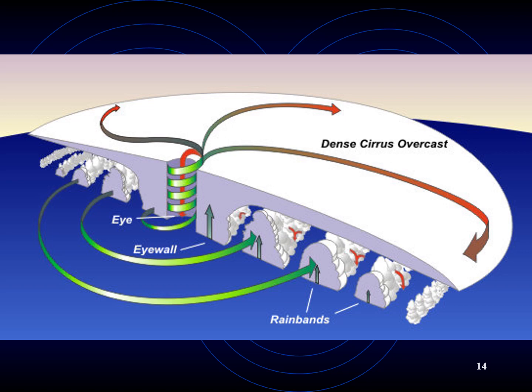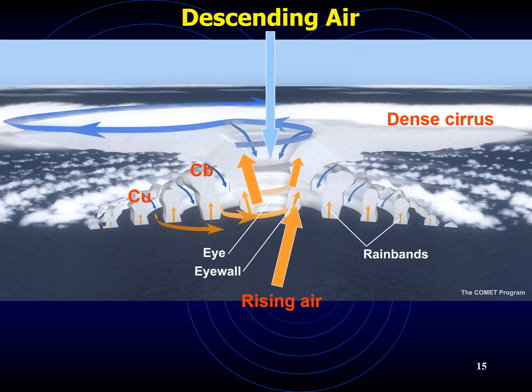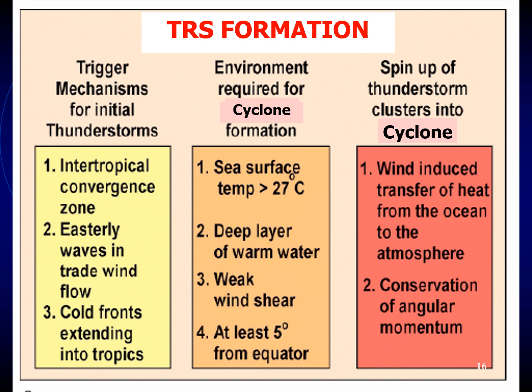As this outflow reaches the storm's periphery, it begins to sink and warm, inducing clear skies. In the vigorous convection clouds of the eye wall, air warms due to the release of large quantities of latent heat. This produces slightly higher pressures aloft, which initiate downward air motion within the eye. As the air subsides, it warms by compression. This process helps account for the warm air and the absence of thunderstorms in the eye of the storm. So much heat is added to the air from the warm ocean surface that the surface air temperature remains fairly uniform throughout the hurricane.